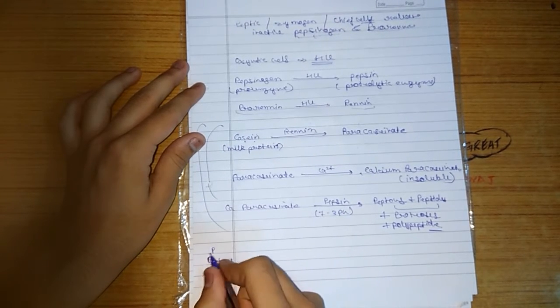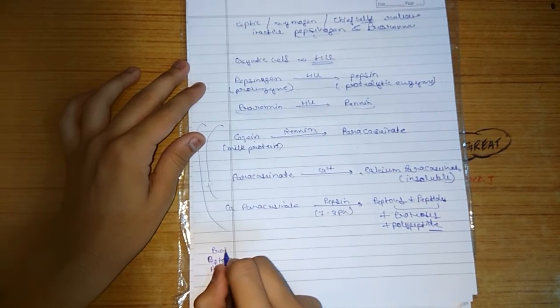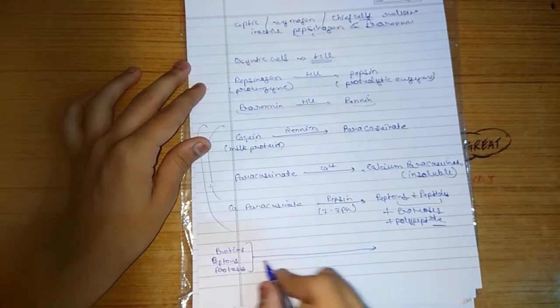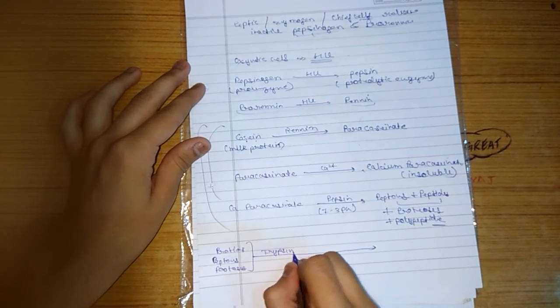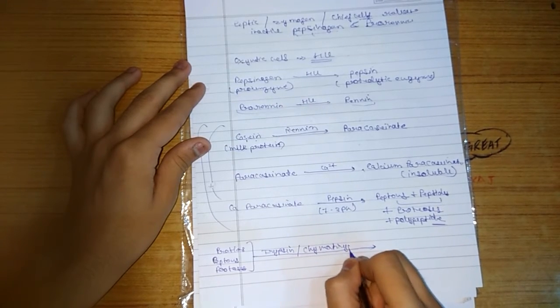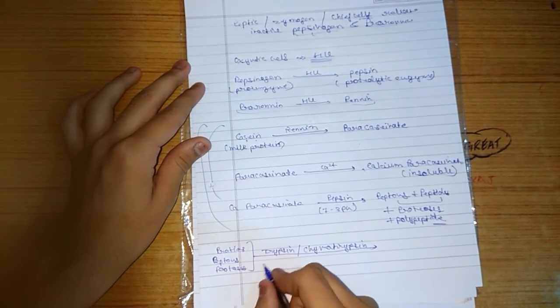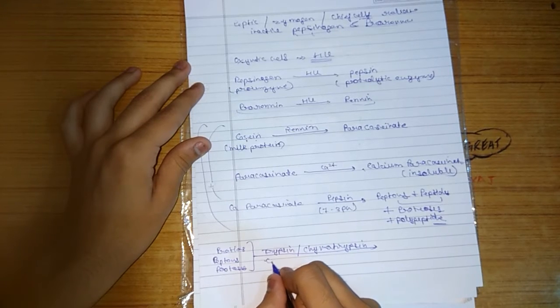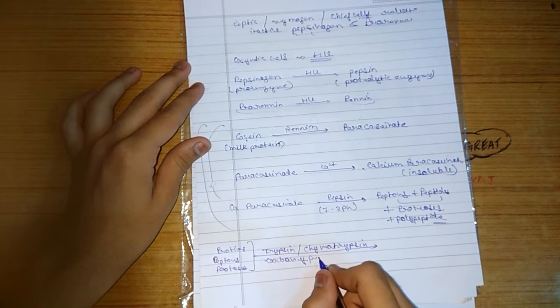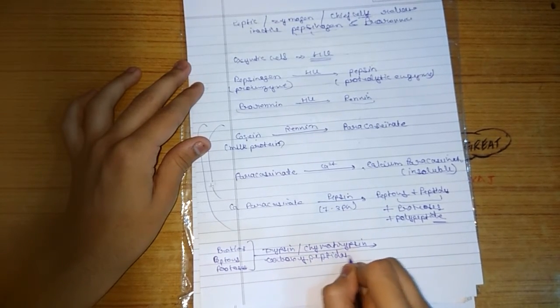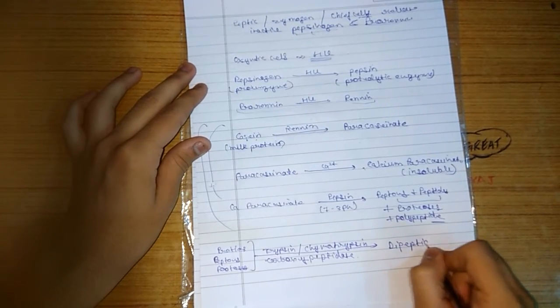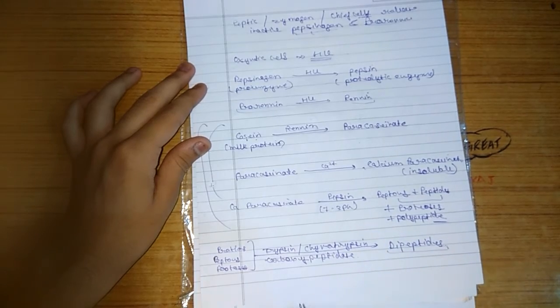And some undigested protein moves to duodenum. In the action of trypsin, chymotrypsin, as well as carboxypeptidase, it converted into dipeptides.